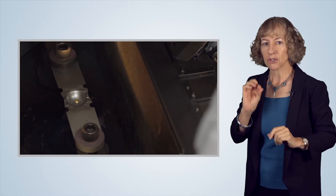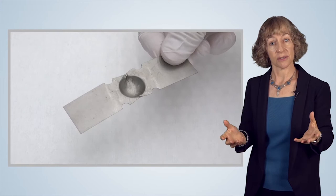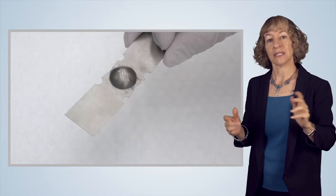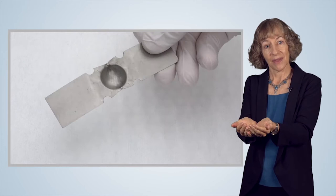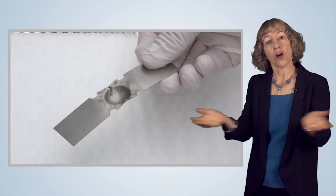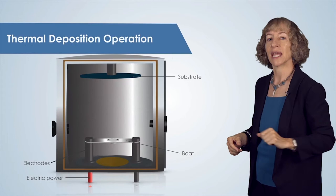To conduct a thermal evaporation, a small amount of source material is placed into a container called a boat. The boat is heated by passing a large electrical current through it in a process called resistive heating. The boats we use are typically tungsten. If we want to melt a metal, its container must remain intact during heating — it shouldn't melt along with the source — and we need to conduct a large amount of current through it. Tungsten has a higher melting point than our source metals and is very electrically conductive, allowing resistive heating to occur.